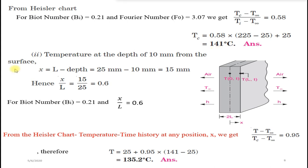Now we find the temperature at a depth of 10 mm from the surface, using the second graph for the infinite plate. We need the x/L value, where x is measured from the centerline. Since 2L = 50 mm, L = 25 mm. The depth from the surface is 10 mm, so x = L − 10 = 25 − 10 = 15 mm. Therefore x/L = 15/25 = 0.6.